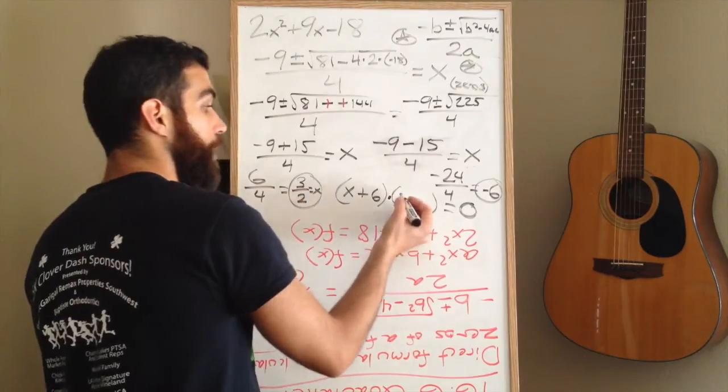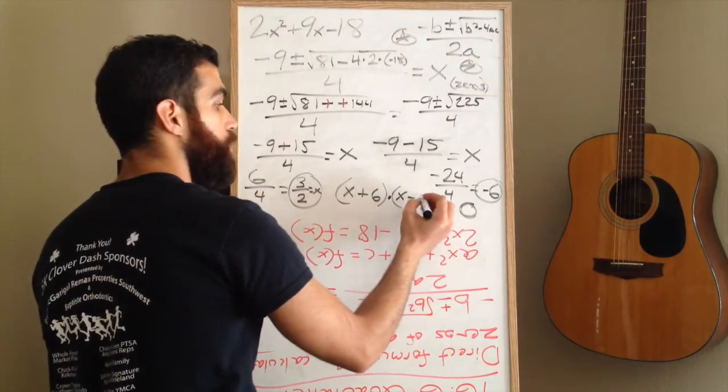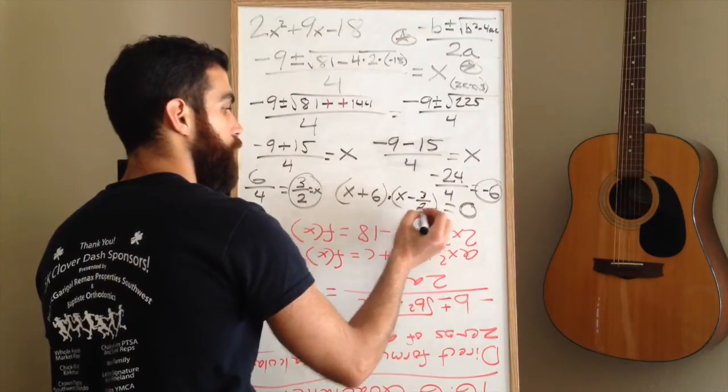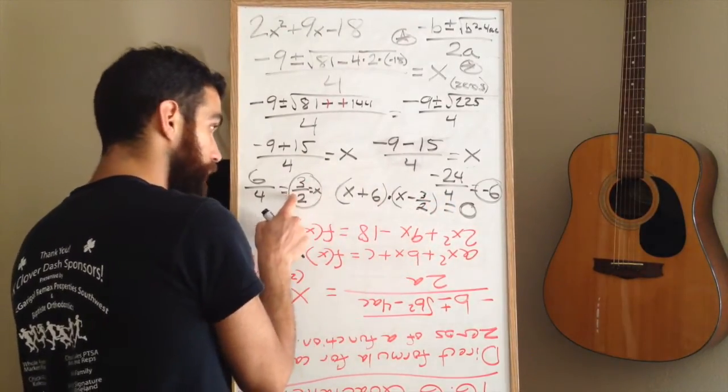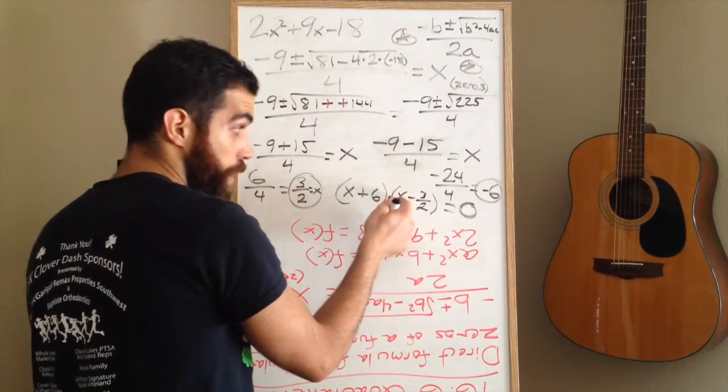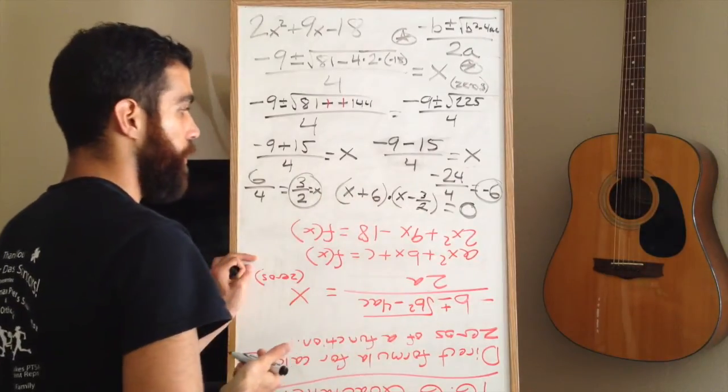The other binomial is going to have x, and then because this is a positive 3 over 2, negative 3 over 2 is what the other value would be. Because, again, when you plug in a positive 3 over 2, and then you have 3 over 2 minus 3 over 2, you would get zero. And that is how you solve a quadratic formula.